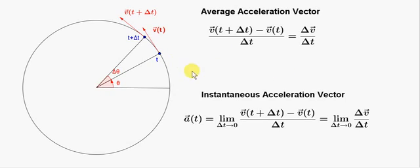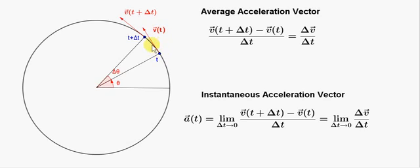In this video, we are going to get the instantaneous acceleration vector of an object undergoing uniform circular motion. Suppose that at time t, the velocity of the object is v of t. Let's suppose that a small interval of time delta t elapses, so the object moves from one point to another. At time t, the velocity is v of t, and at time delta t later, the velocity is v of t plus delta t.